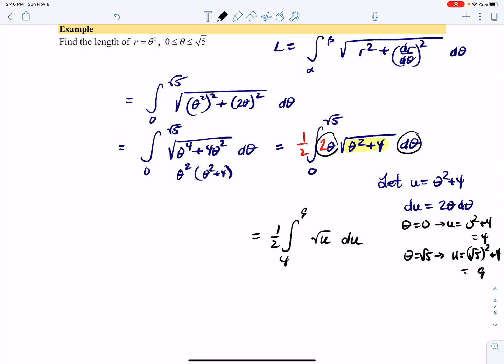Gee, this problem is not rigged at all, is it? Perfect squares, square roots—I think this was rigged. That means we have (1/2) times... now this is u^(1/2).